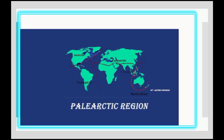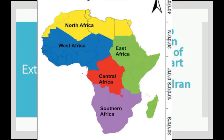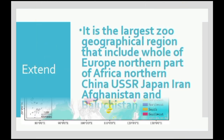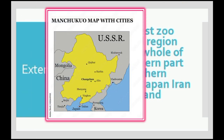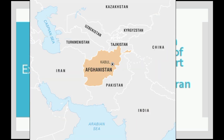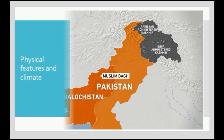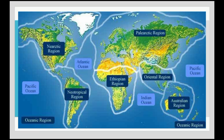It is the largest zoogeographical region that includes the whole of Europe, the northern part of Africa, northern China, USSR, Japan, Iran, Afghanistan, and Balochistan.